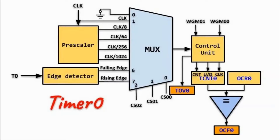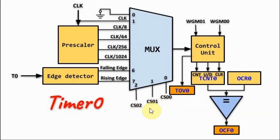A detailed block diagram of Timer 0 is shown here. The multiplexer circuit provides the clock signal needed to run the control unit of Timer 0. The multiplexer is controlled by three clock select bits available within the timer counter control register, and a 3-bit value here determines which clock input will be available at the output.